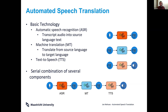Then we take that text and use our machine translation system to translate it into the target language. Finally, we can use our TTS to output the result as audio. Although this has several challenges — you can already see that errors will propagate — this cascade is still the state of the art.